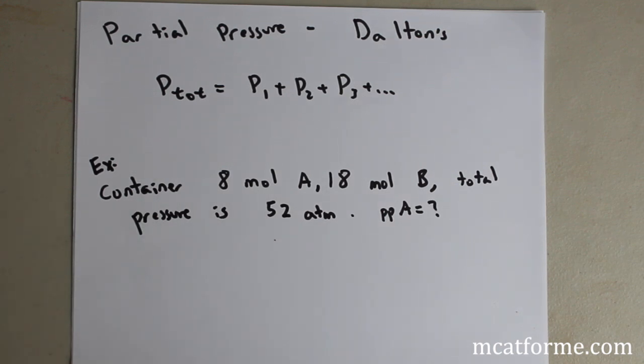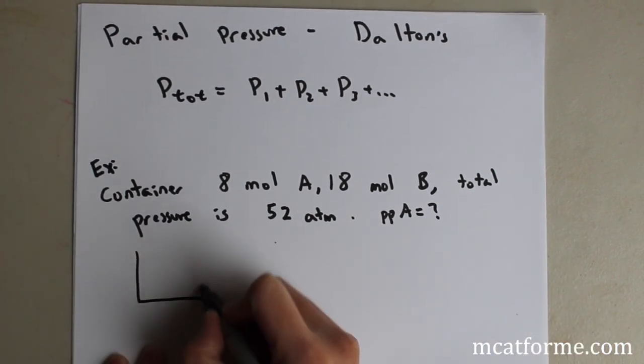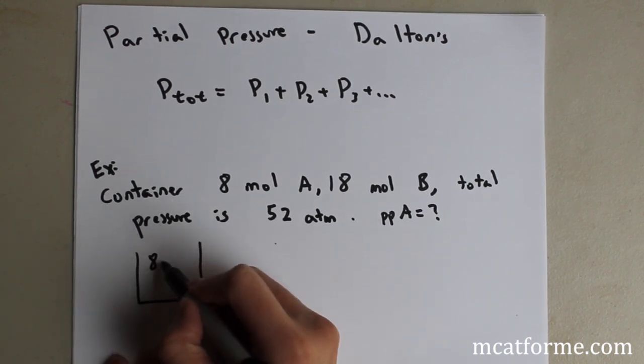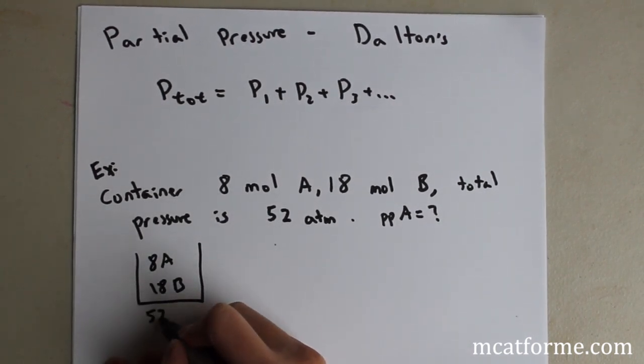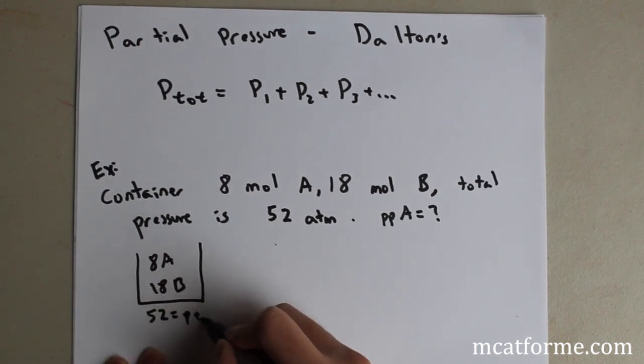So a basic example would be, we have a container, and it contains 8 moles of A, 18 moles of B, and the total pressure of that system is 52 ATMs. What is the partial pressure of A? So pretty much it's just proportion. So we know that if we have a box like this, we're going to have 8 of A, and we're going to have 18 of B. And this total pressure is 52. That's the total pressure.